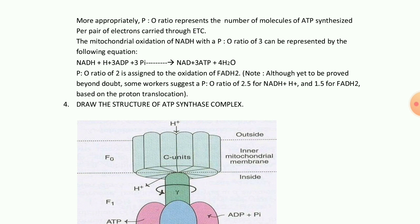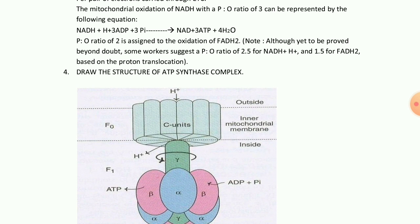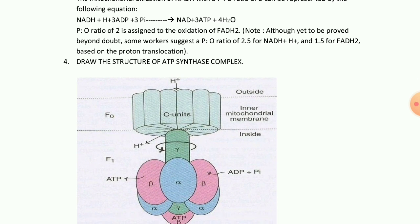The P/O ratio for NADH is 3 to 1, while the P/O ratio for FADH2 is 2 to 1. Sometimes it can be represented as P/O ratio of 2.5 for NADH and 1.5 for FADH2.